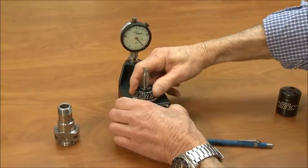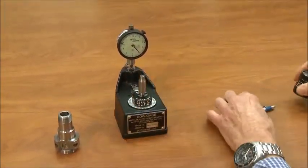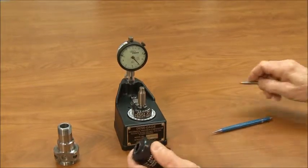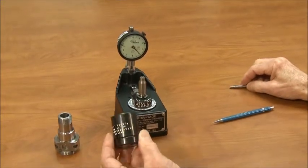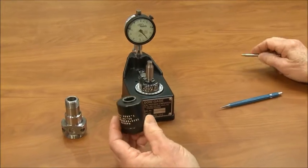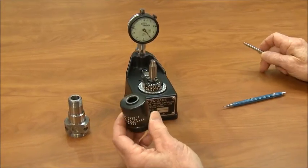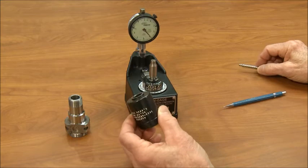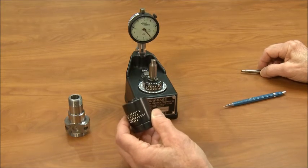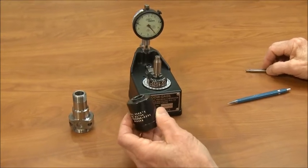Locked and tightened in position, the gauge is set to zero with a setting master that has been designed to replicate the counterbore depth in the part that's being checked. In this case the part is being checked to a tolerance of plus or minus two thousandths.